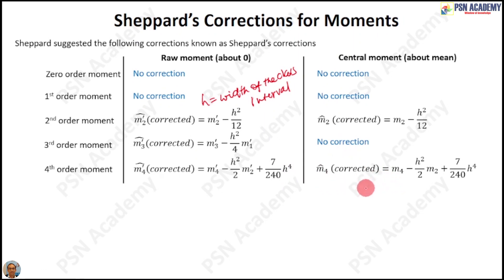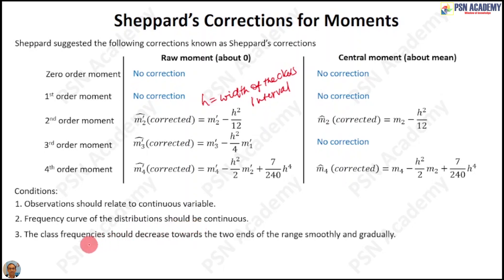Now, the question is, can you apply Sheppard's corrections in all situations? The answer is no. There are some conditions. The first condition is that your observations must be continuous variables. Your frequency curve of the distributions should also be continuous. The class frequencies should decrease towards the two ends of the range smoothly and gradually.